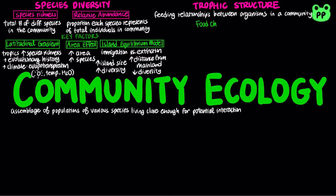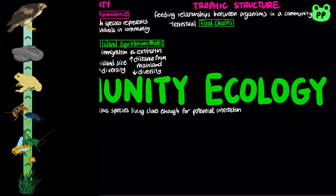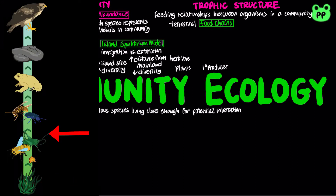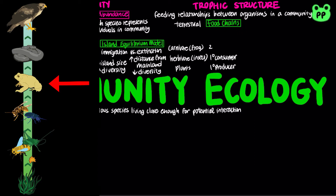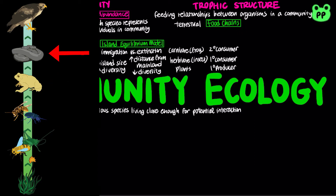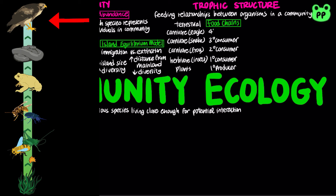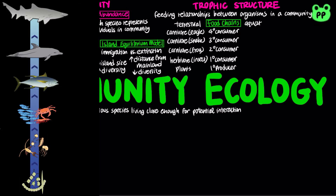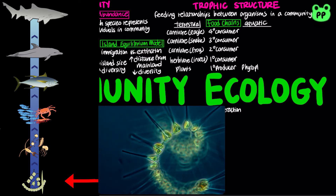Food chains link trophic levels from producers to top carnivores. An example of a terrestrial food chain involves plants as the primary producer, herbivores such as insects as primary consumers, carnivores such as frogs as secondary consumers, snakes as tertiary consumers, and eagles as quaternary consumers.